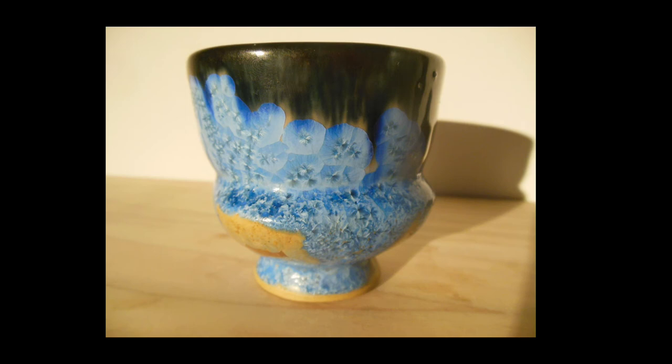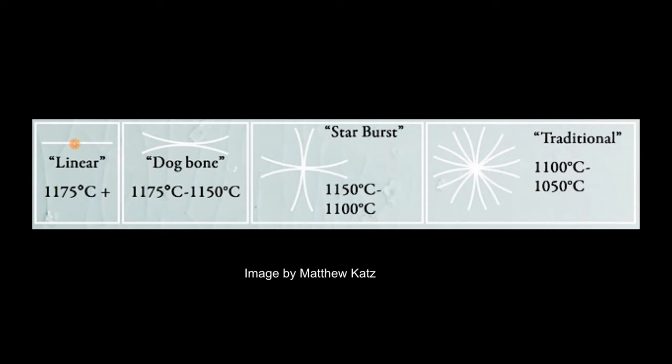Crystal growth happens during the five-hour holding period — the longer the hold, the larger the crystals, and the longer the cool cycle, the more tiny crystals you get growing. The temperature that it's held at can also affect the shape of the crystals. I chose to do just the traditional shape because I was exploring alumina levels rather than shape variations. In Fahrenheit that's 1922 to 2012°F for the traditional crystal shape.